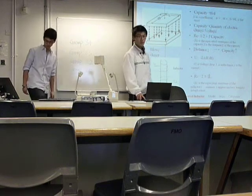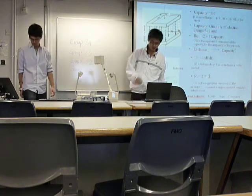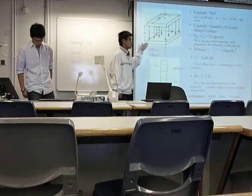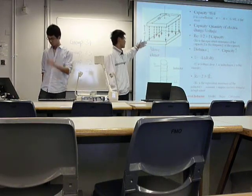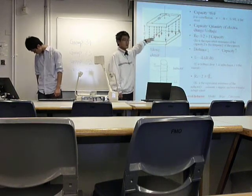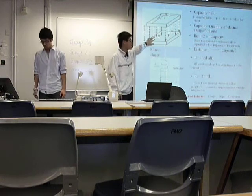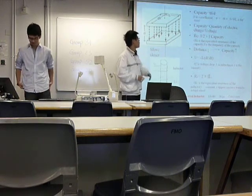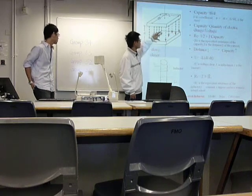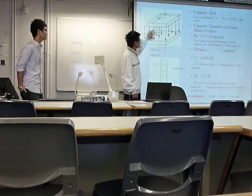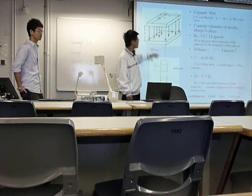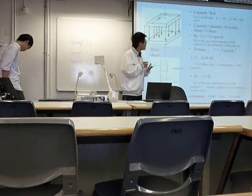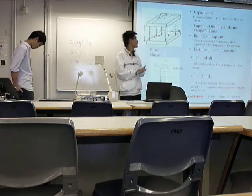Now let's cover some background knowledge. First, there are two devices always used in electronic circuits. One of them is called the capacitor. It's always made of two pieces of metal, and the capacitance is defined as the quantity of electronic charge over voltage.